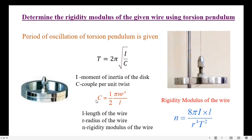Here C can be written as C equals one half times π n r to the power 4 divided by l, where l is the length of the wire, r is the radius of the wire, and n is the rigidity modulus of the wire. The rigidity modulus of the wire is calculated by using the expression n equals 8π I times l divided by r to the power 4 times T squared.